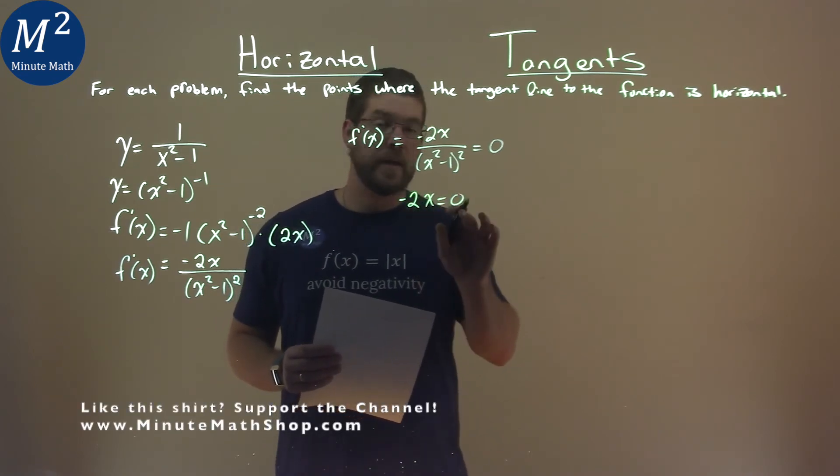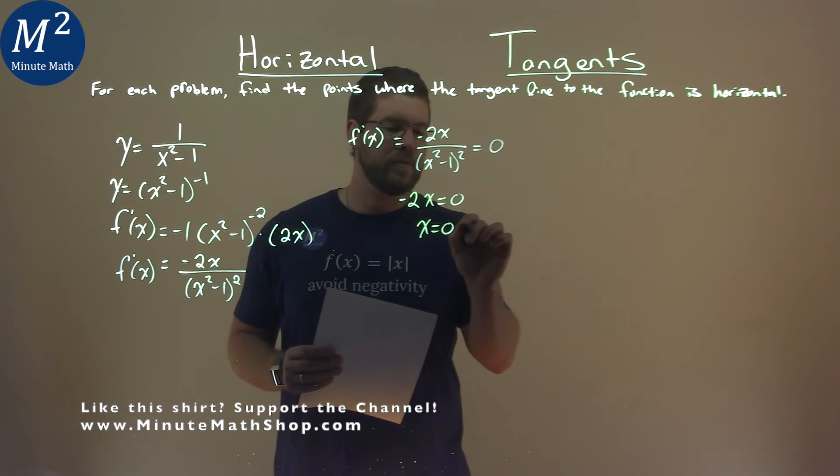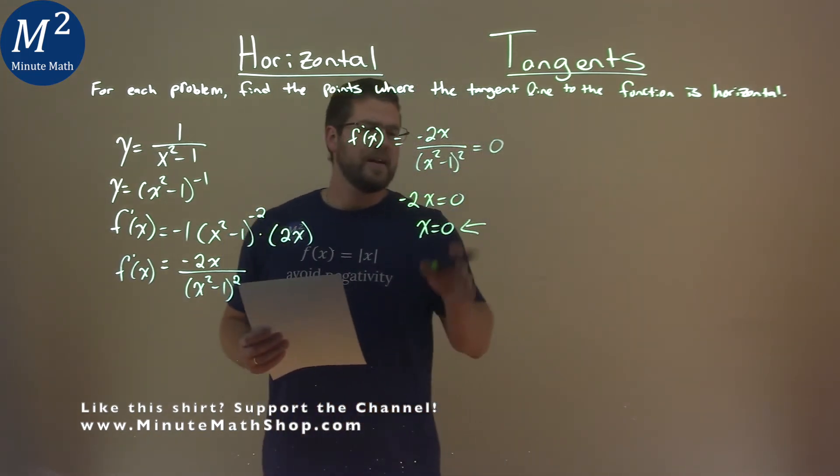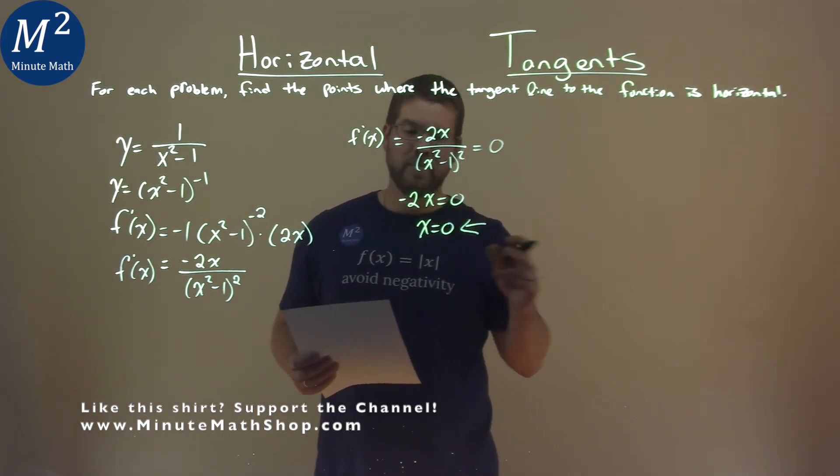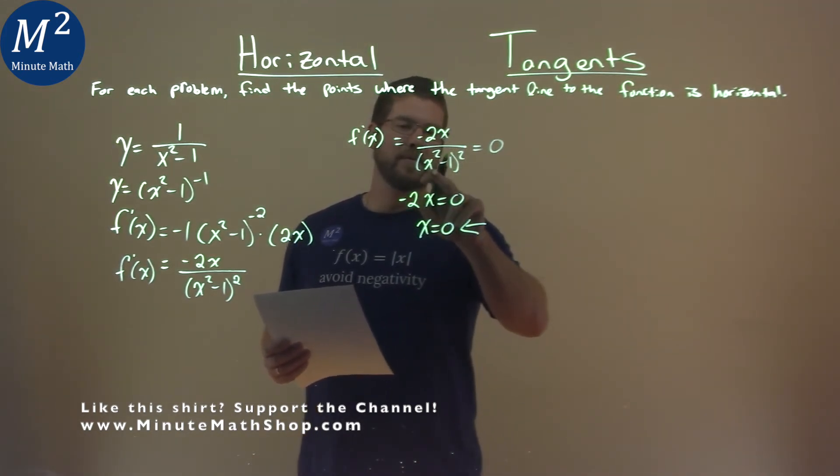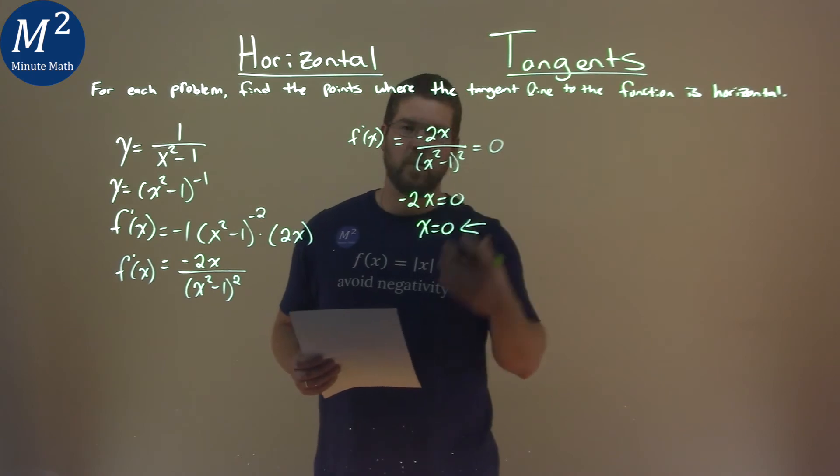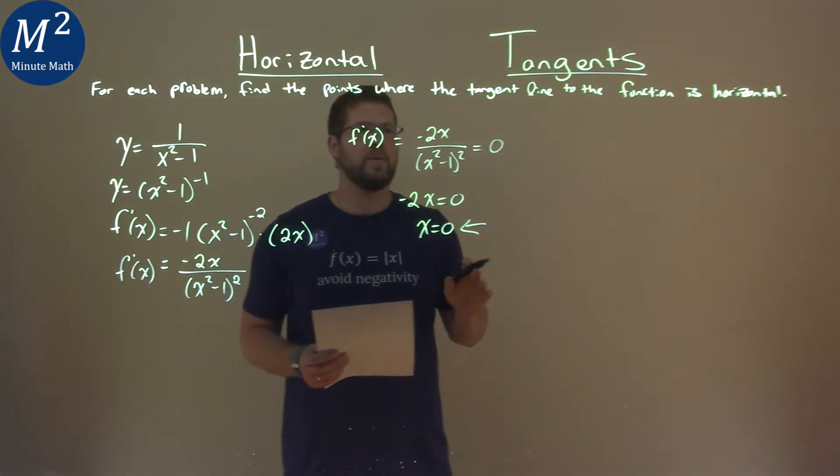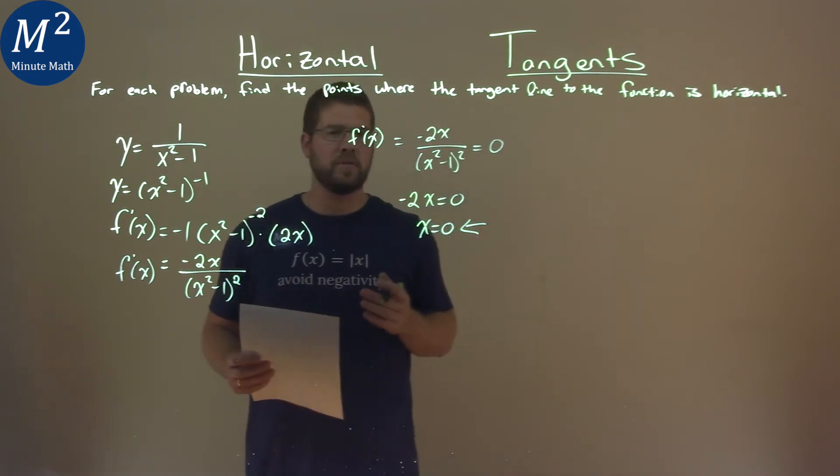Divide both sides by negative 2, and x equals 0. And that's the main point we're actually going to be working with. Just to double check that 0 doesn't cause the denominator to equal 0, 0 squared minus 1 is negative 1, we're good.